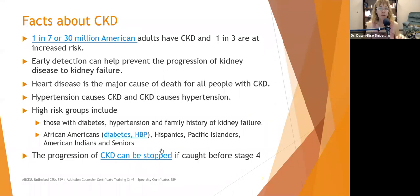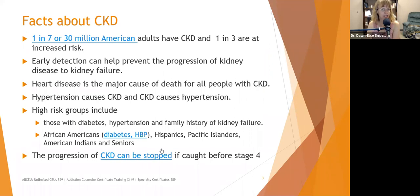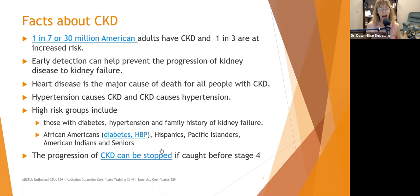Heart disease is the major cause of death for all people with chronic kidney disorder. Your adrenal glands are on your kidneys, so when the kidneys start to malfunction, blood pressure often goes up and becomes difficult to control, which can lead to stroke or heart disease. Hypertension causes chronic kidney disease, and chronic kidney disease causes hypertension — there is a bidirectional relationship between the two. If you're seeing someone for anxiety who has high blood pressure, it's important to help them understand the risks and why monitoring their blood pressure matters.